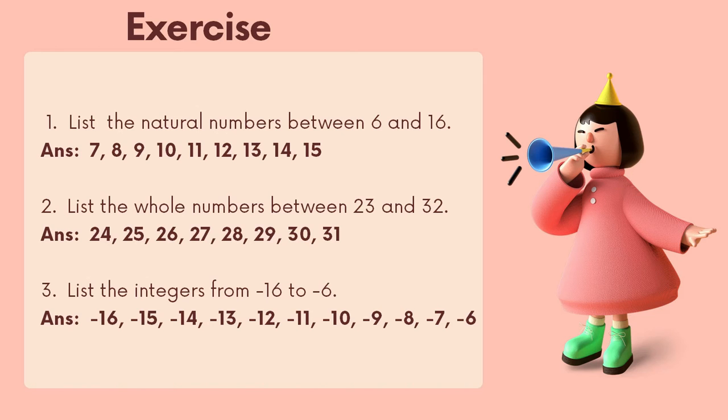For question three — list the integers from negative sixteen to negative six — the answer is negative sixteen, negative fifteen, negative fourteen, negative thirteen, negative twelve, negative eleven, negative ten, negative nine, negative eight, negative seven, and negative six.